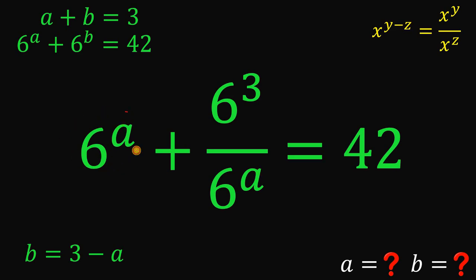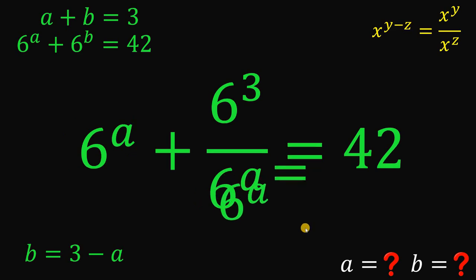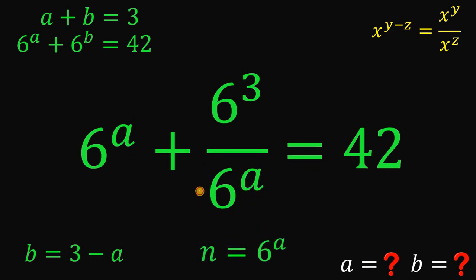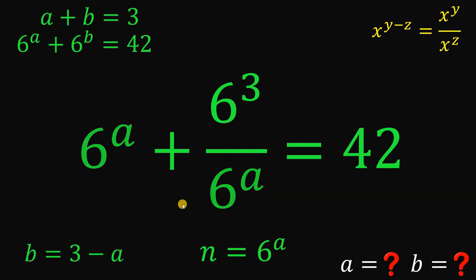Now we see two similar terms: we have 6 raised to the power of A appearing more than once. So why not replace this with another variable and call it N? We can replace all instances of 6 raised to the power of A with the variable N.